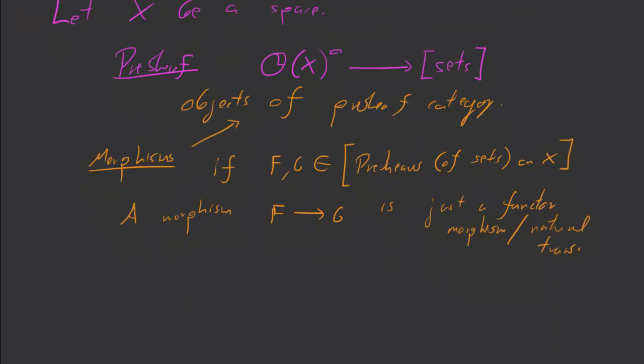So maybe more concisely, the way of describing this pre-sheave category is the category of pre-sheaves on X. This is all pre-sheaves of sets. This is just the functor category. It's the HOM in the category of categories from O of X into sets.